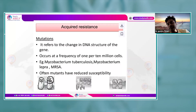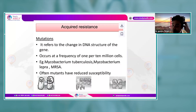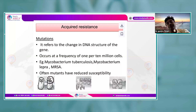Acquired resistance involves genetic mutations — a change in DNA structure — occurring at a frequency of 1 in 10 million cells. A famous example is Mycobacterium tuberculosis developing resistance to isoniazid or rifampicin, leading to XDR-TB or NDR-TB.